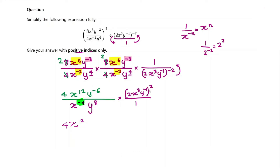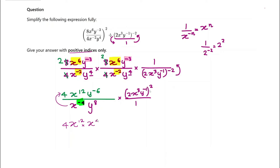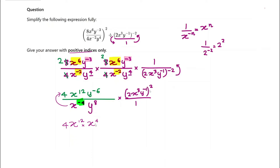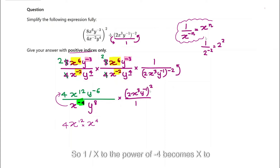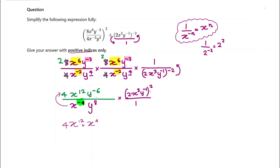Moving x to the power of negative 4 to the top, it becomes positive: multiplied by x to the power of 4. The theory I use here is: 1 over x to the power of negative n becomes x to the power of n. So 1 over x to the power of negative 4 becomes x to the power of 4. Now look at the y values.